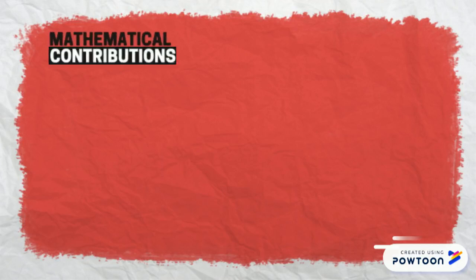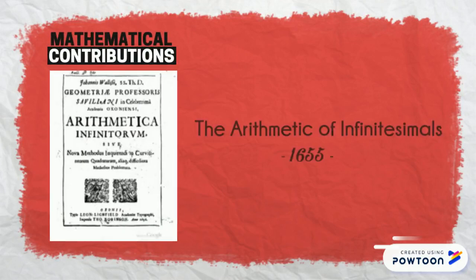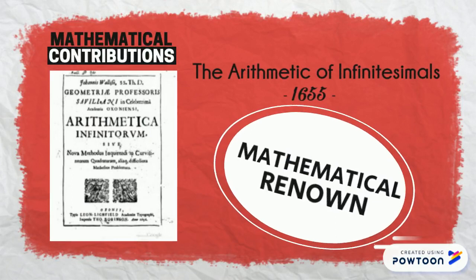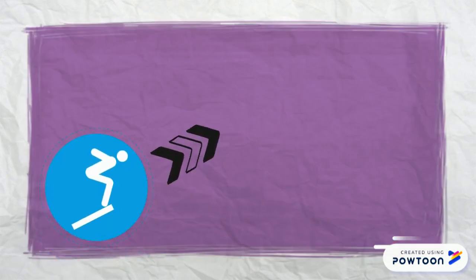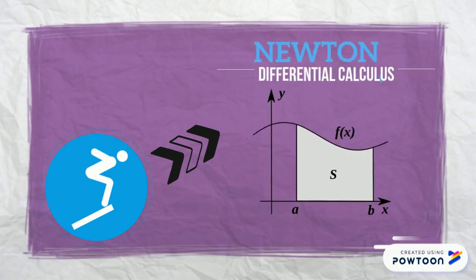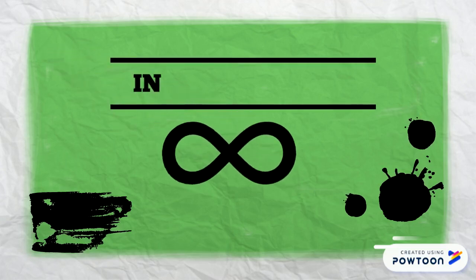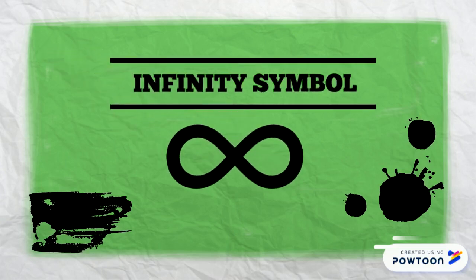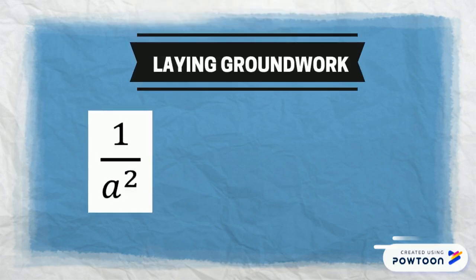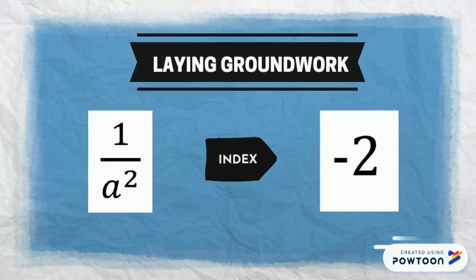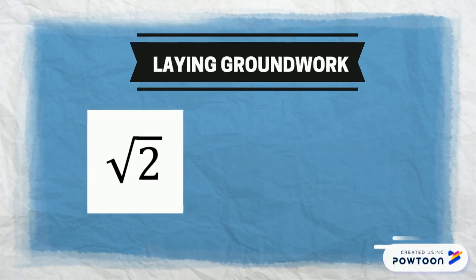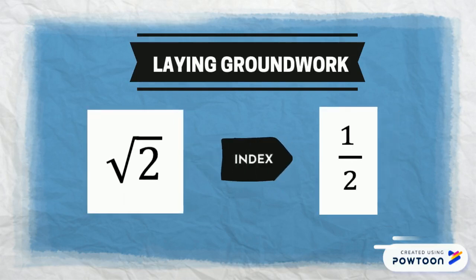Wallis also published the Arithmetic of Infinitesimals, which is the main work he became most known for in the field of mathematics. It served as a springboard to Newton's results on differential calculus a decade later. He is also known for introducing the symbol of infinity, and laid the groundwork for writing expressions such as x to the index negative 2, and the square root of x whose index is one half.